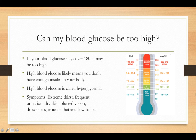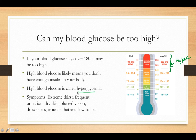Can your blood sugar be too high? Yes, it can — this is called hyperglycemia, shown in the red range on the graphic. This means the sugar in your body is possibly not being taken into your cells. Symptoms include extreme thirst, frequent urination, dry skin, and blurred vision.